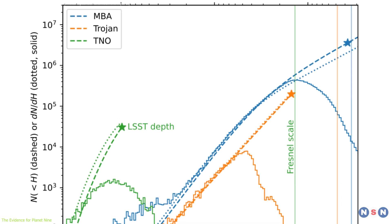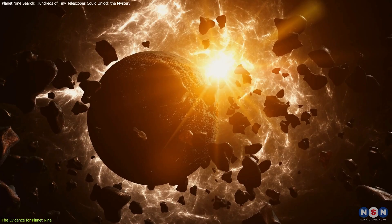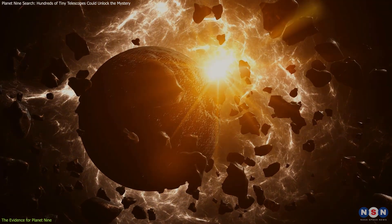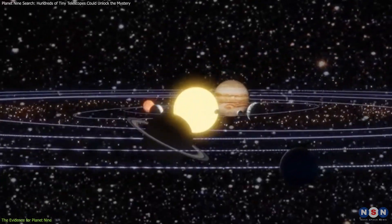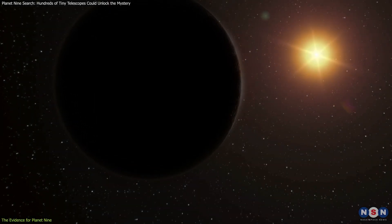Simulations based on this hypothesis revealed that the gravitational pull of such a planet could explain the peculiar orbital clustering of certain TNOs. However, despite years of surveys and sky observations with powerful telescopes, no direct evidence of Planet 9 has been found.